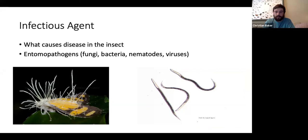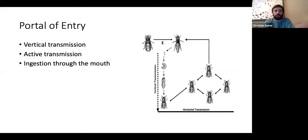Next is the portal of entry. There is vertical transmission, where an infected mother lays an egg and that offspring will also have the virus. There is active transmission, similar to us being bitten by a mosquito contracting malaria — an insect gives another insect a disease. There is also ingestion through the mouth, which is most common — an insect eats an infected plant part or another insect and picks up the virus.